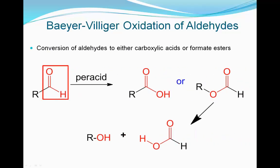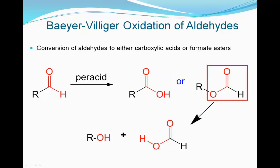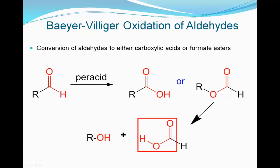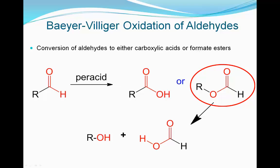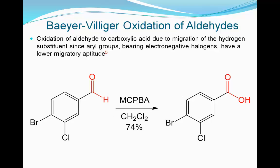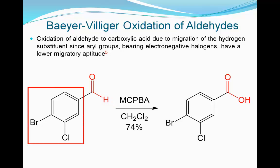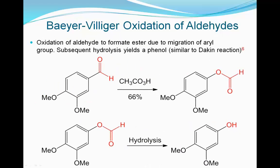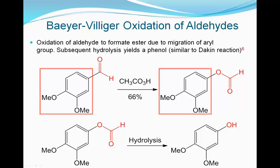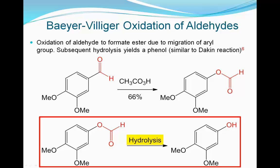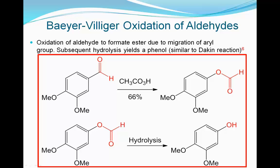The oxidations of aldehydes are also possible with Baeyer-Villiger oxidation. The reaction of aldehydes may give either carboxylic acids or formate esters. In the latter case, alcohols and formic acid may be formed due to hydrolysis of unstable formate esters under the reaction conditions. In the example, the aldehyde group is oxidized to a carboxylic acid due to preferential migration of the hydride ion. The aryl group with electronegative halogen substituents has lower migratory aptitude. In the following reaction, the aldehyde is oxidized to a formate ester due to the preferential migration of the aryl group, but it undergoes hydrolysis under the reaction conditions to yield a phenol. This overall transformation is similar to that of the Dakin reaction.